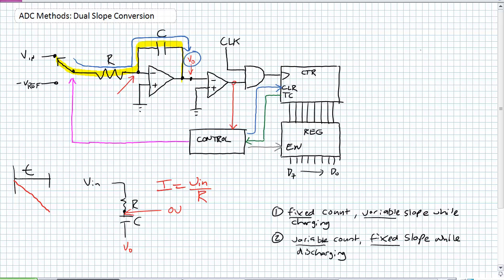If we did not have that limited time period, that capacitor would keep on charging up and keep on charging because it's got that constant current input — it would charge all day. But we're just going to charge it for a little bit of time. The point is that input voltage — if the current is constant and the resistance is constant — the rate is proportional to that input voltage. The higher the input voltage, the greater the current. That's the fixed count variable slope while charging.